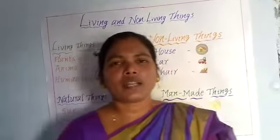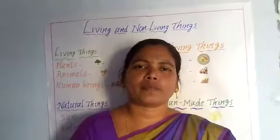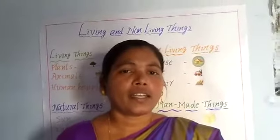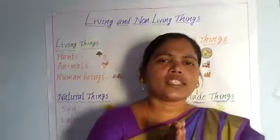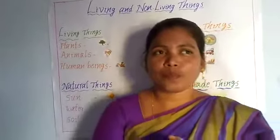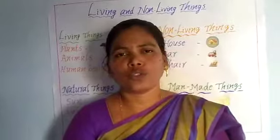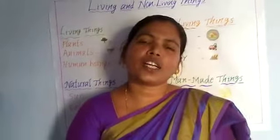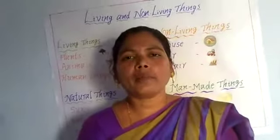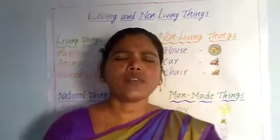Non-living things can be natural or man-made things. Natural things include water, sun, moon, stone, and soil. These are natural things — not made by man. That's why we call them natural things.